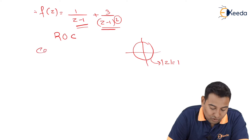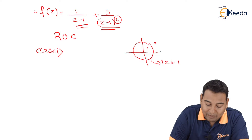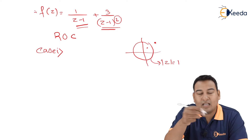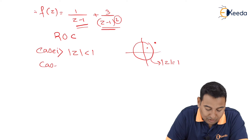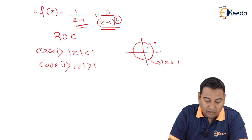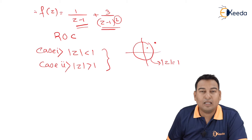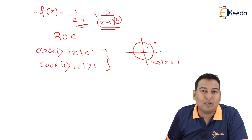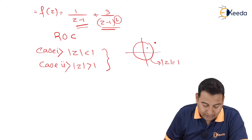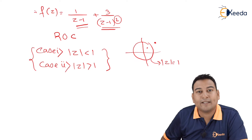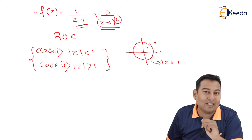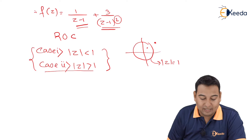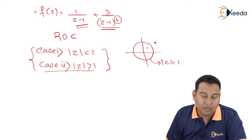Two cases are possible: a point lying inside the circle (|z| < 1) or outside the circle (|z| > 1). If asked to solve for all cases, we solve both. However, in this given problem we only need to solve for one case: |z| > 1.